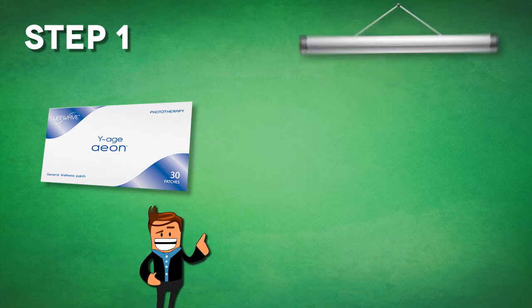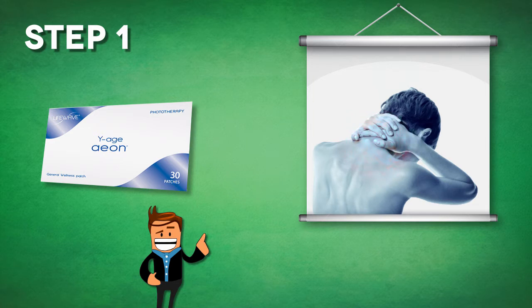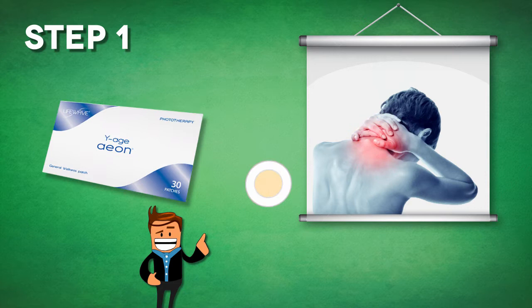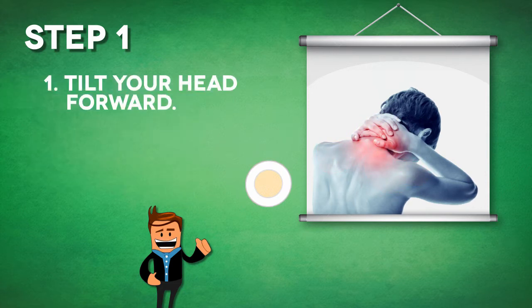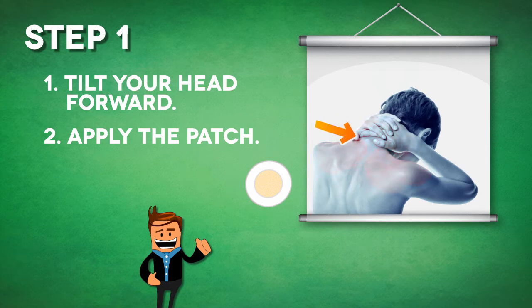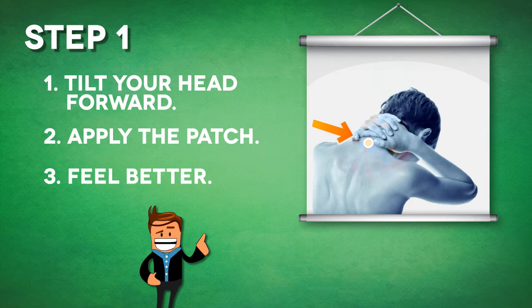Now, where do most people carry their stress? It's going to be in their neck and shoulders, and that's exactly one of the places where you can use the Eon patch. And it's really easy to find. You're simply going to tilt your head forward, and this bone which protrudes at the back of the neck is where you apply the Eon patch. This is known as the C7 vertebrae. The LifeWave Eon patch is going to do a great job at reducing stress in your daily life.